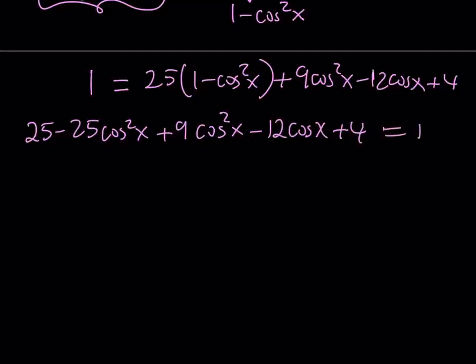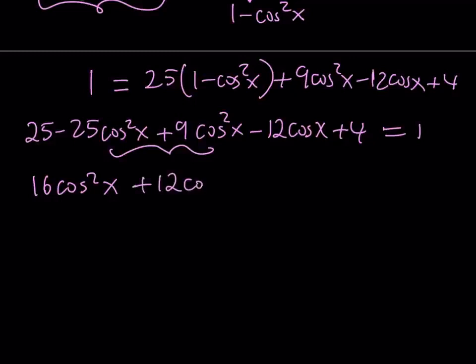I'd like to combine like terms and put everything on one side. These two will make negative 16 cosine squared x on the left-hand side, or 16 cosine squared x on the other side. I have negative 12 cosine x; on the right-hand side it's going to be positive. And then I have 25 plus 4 which is 29. If I subtract 1, that will be 28, but negative 28 on the right-hand side — you can also think of it as 1 minus 29.